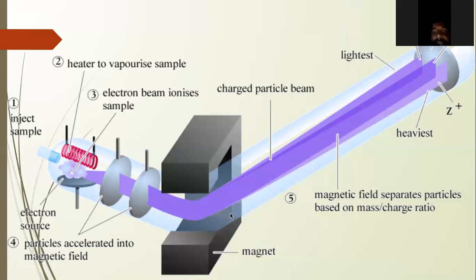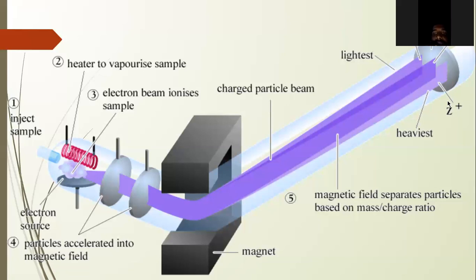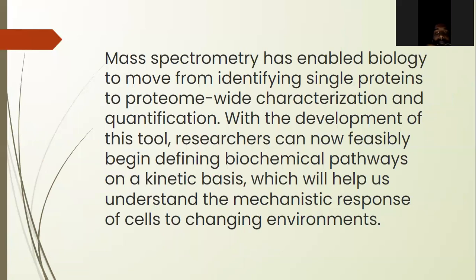The fifth part is the charged particle beam. By reason of the magnet — which works through attraction — the charged particles change direction, which is called bending. The magnetic field separates the particles based on the mass-to-charge ratio. There is a lightest part, a heaviest part, and a detector. These are represented as x+, y+, and z+ ratios, which is called mass spectroscopy.